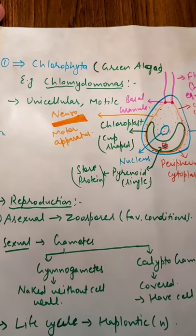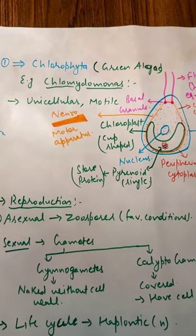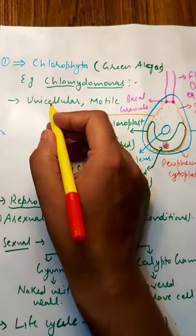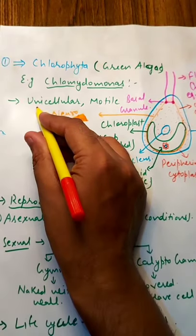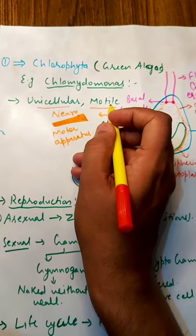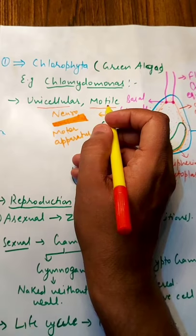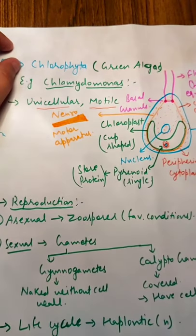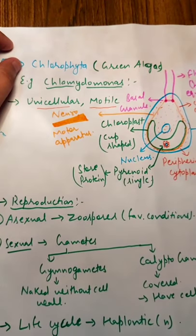A famous example of green algae is Chlamydomonas. So here we will study Chlamydomonas in detail. Chlamydomonas are unicellular and motile — unicellular means they are made of a single cell, and motile means able to move from one place to another.